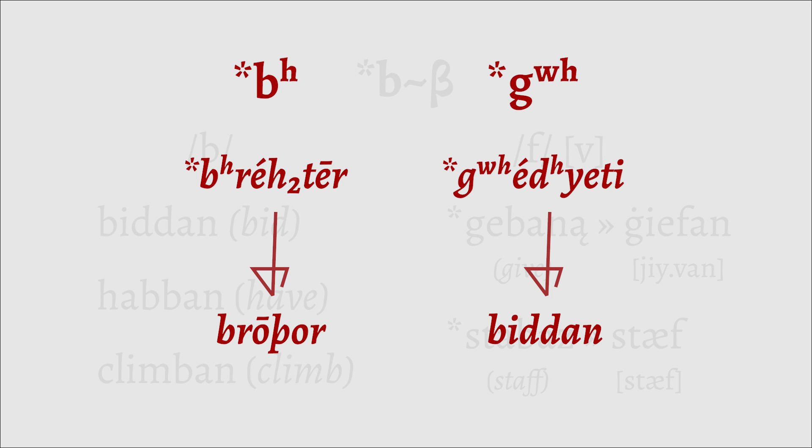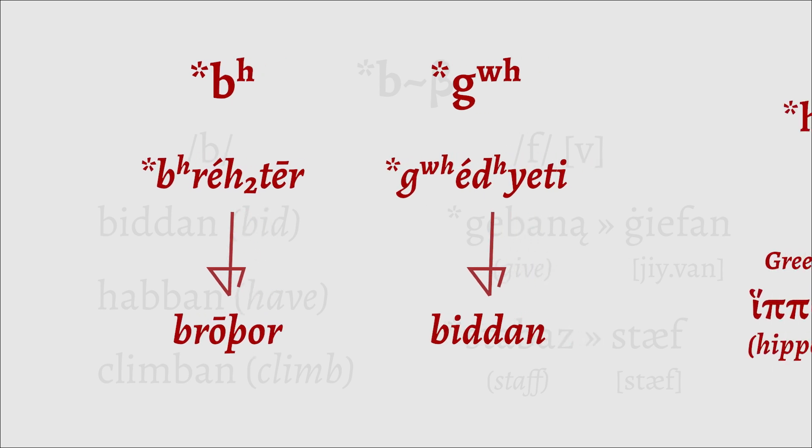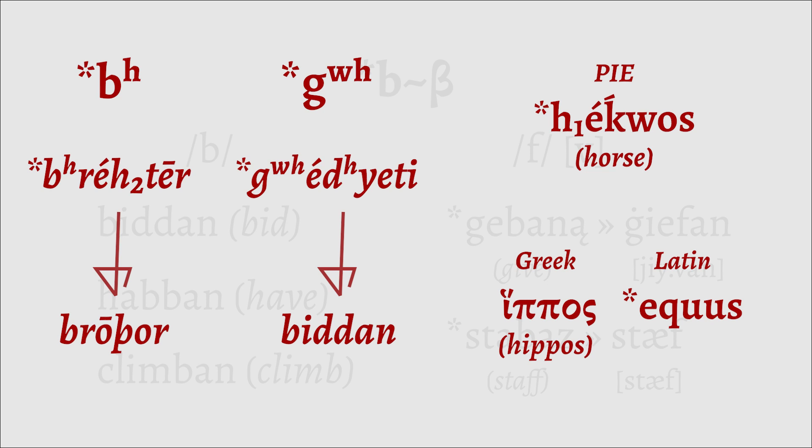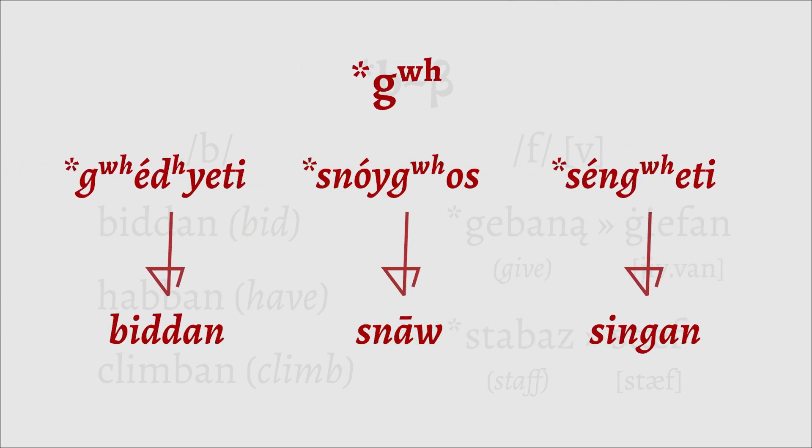Now this change isn't that uncommon and can be seen with labial velars merging with the labials in Greek, giving us equus vs. hippos. Intervocalically, murmured G just merged with the W sound and merged with regular G elsewhere.